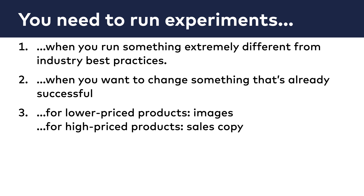On the other hand, for high-priced products it's worth it to test the sales copy first — just as I did for my $497 online course. When you sell an expensive product, you can expect people to make a rational decision. For that, you should try to help them by writing more comprehensive product descriptions so they can evaluate your offer from every aspect and make a good decision. Of course, there are exceptions on both sides — for instance, people tend to pay for summer vacations or cars based on emotions and not always rationally.